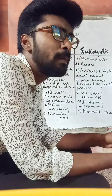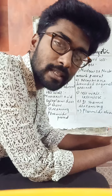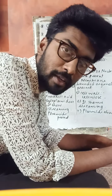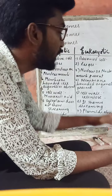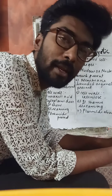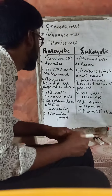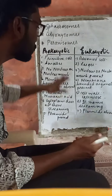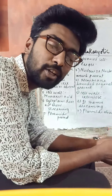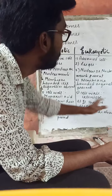Fourth point: membrane-bounded cell organelles such as mitochondria, Golgi bodies, endoplasmic reticulum, and lysosomes are majorly absent in the prokaryotic cell, but membrane-bounded cell organelles are present in the eukaryotic cell.